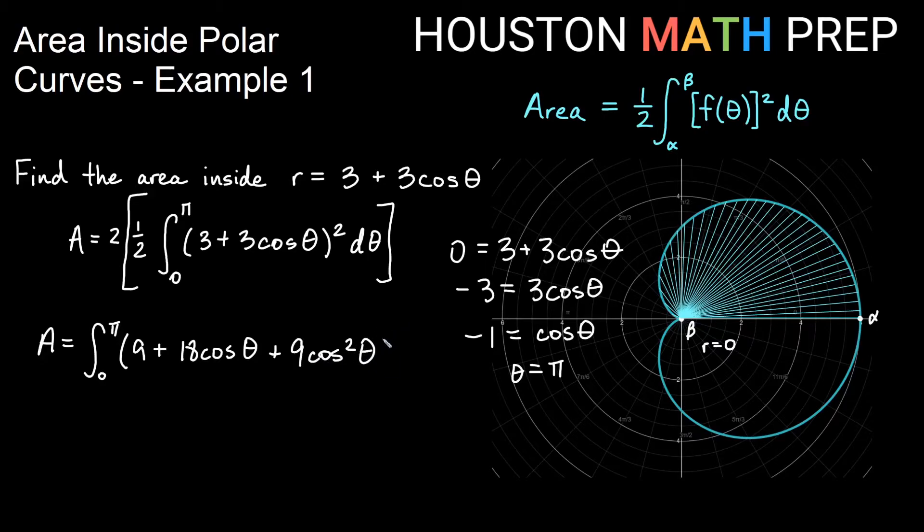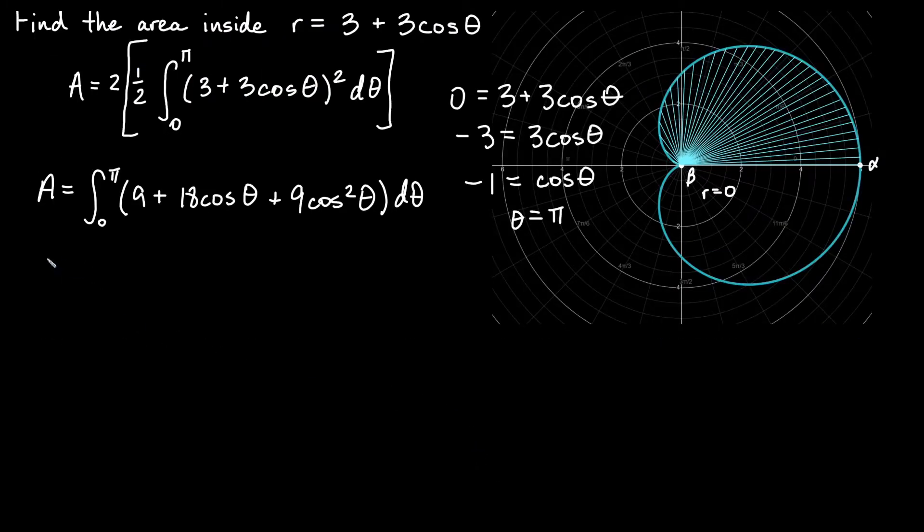Okay, all of these are easily integrated. This last term with a cosine square, we might want to reduce the power there. So let's go ahead and do that. We're going to use a double angle formula here.